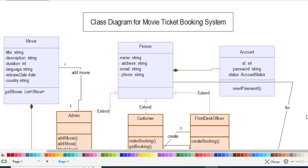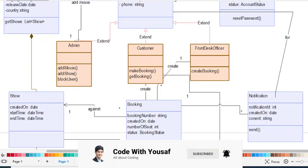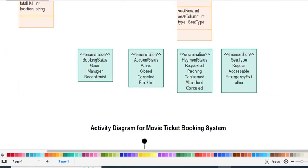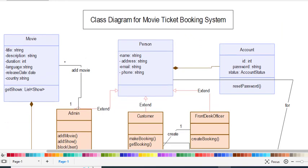Now let's start the class diagram for the movie ticket booking system. Please subscribe to our YouTube channel. First of all, we have the Movie class. The Movie class has attributes: title, description, duration, language, release date, and country. It also has the function getShow(), which returns the list of shows associated with that movie.